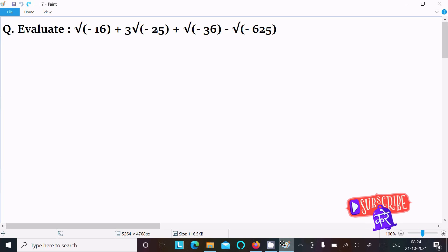I am going to evaluate √(-16) + 3√(-25) + √(-36) - √(-625). Here, since minus is inside the root, we know √16 has a value of 4.